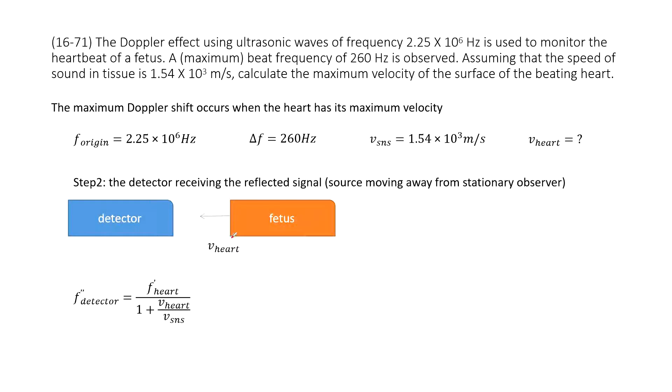Step 2: we find the sound waves will move back, return to the detector. And we want to make it maximum. So we find this is the source moving away from the stationary observer, because this time the detector becomes the observer. It's stationary, and the fetus is the source moving away. So source moving away from stationary observer, and then we can see we get the function in our textbook, look like this one.